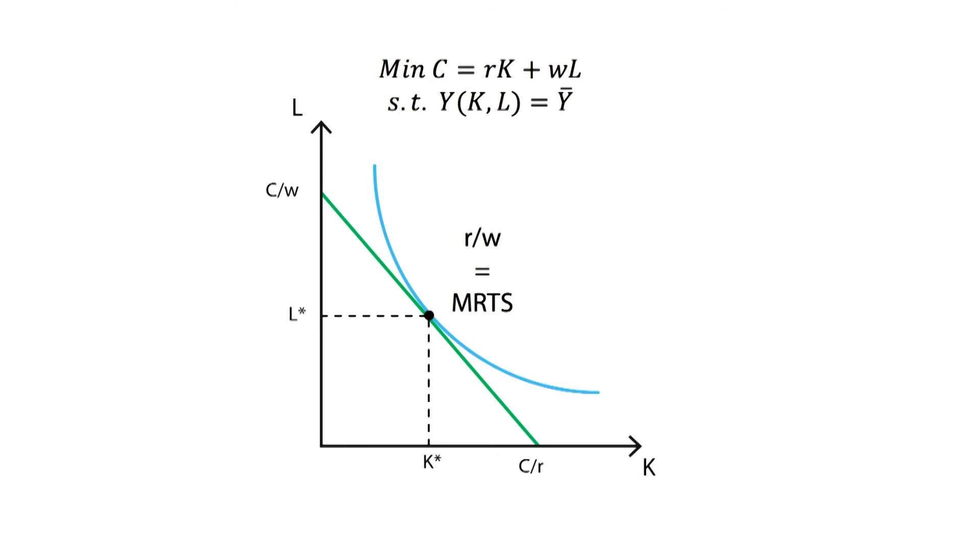This optimization problem must be seen as one of two sides of a coin, called production duality. Indeed, a similar but opposite analysis can be done solving the primal problem, the production maximization problem.